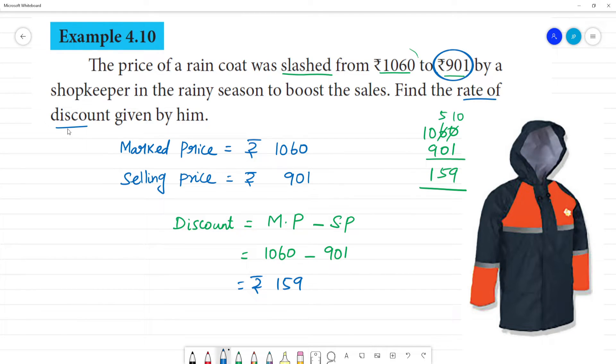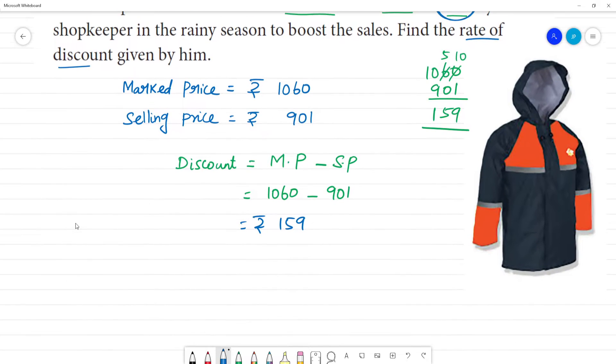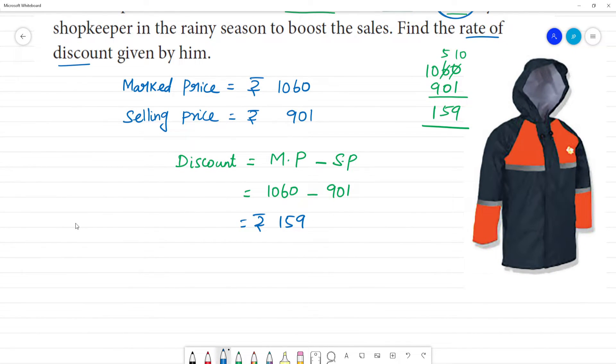Find the rate of discount. Find the rate of discount, the percentage of the discount given by him. Discount percentage is equal to discount by marked price multiplied by 100. This is discount percentage. Discount is 159 rupees, marked price is 1060.